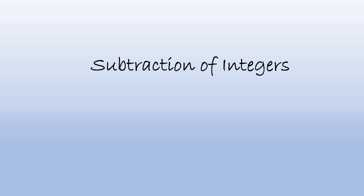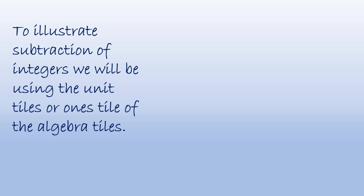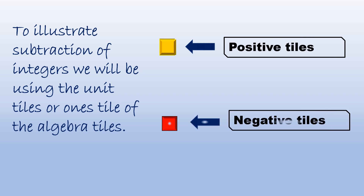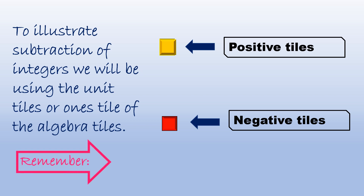Our topic for this video is on subtraction of integers using algebra tiles. To illustrate subtraction of integers, we will be using the unit tiles or one's tile of the algebra tiles. The yellow are the positive tiles and the red are the negative tiles. We have to remember that one yellow tile plus one red tile is equal to zero.